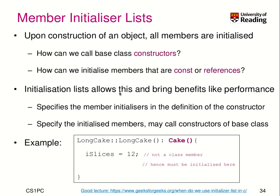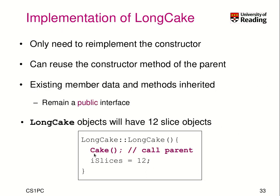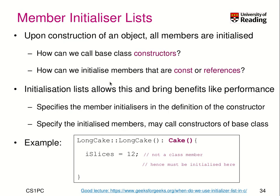Let's talk a little bit more about how constructors work and how we actually initialize members. There exists a construct called MemberInitializerList. When you construct an object, all members get initialized. The question is, how can we call base class constructors? We saw that we can do it by calling a parent constructor in our own constructor, but there are cases where it has to be done differently — particularly when we have to initialize members that are constant or references. Initialization lists are there to resolve those issues, and they additionally increase performance.